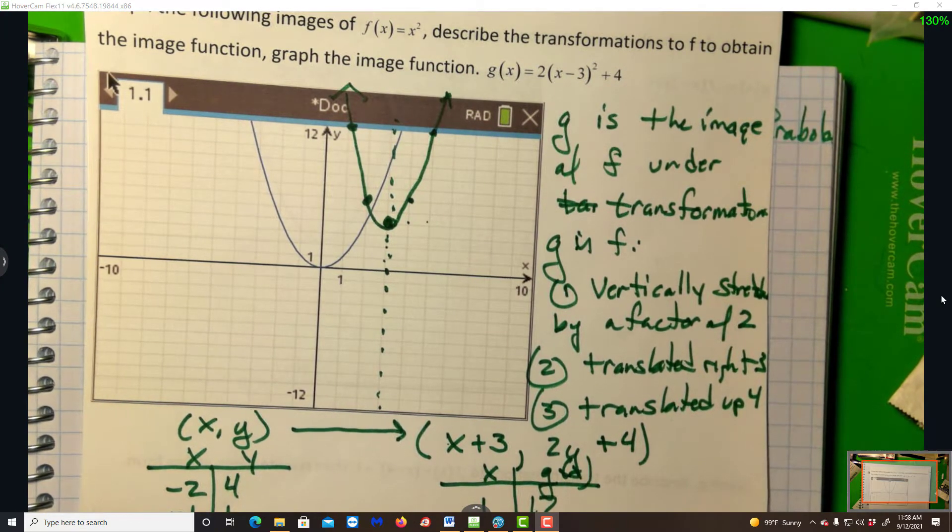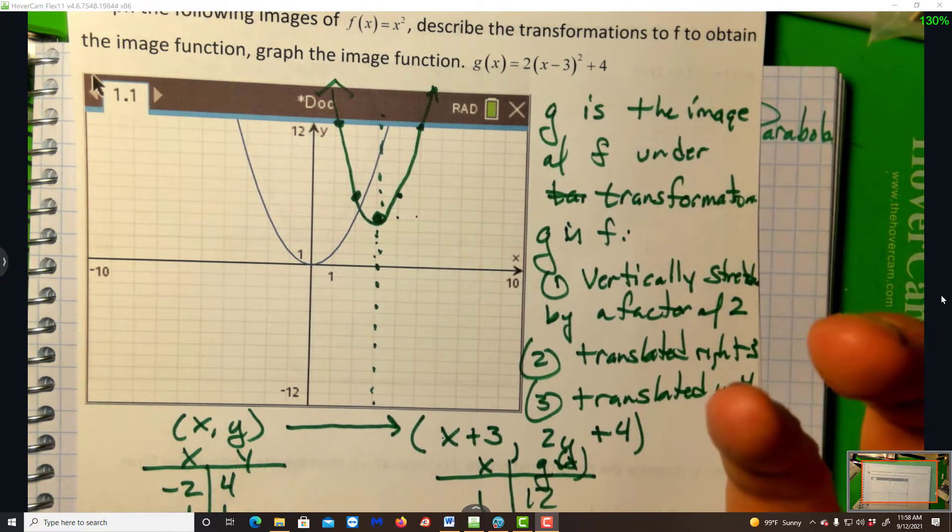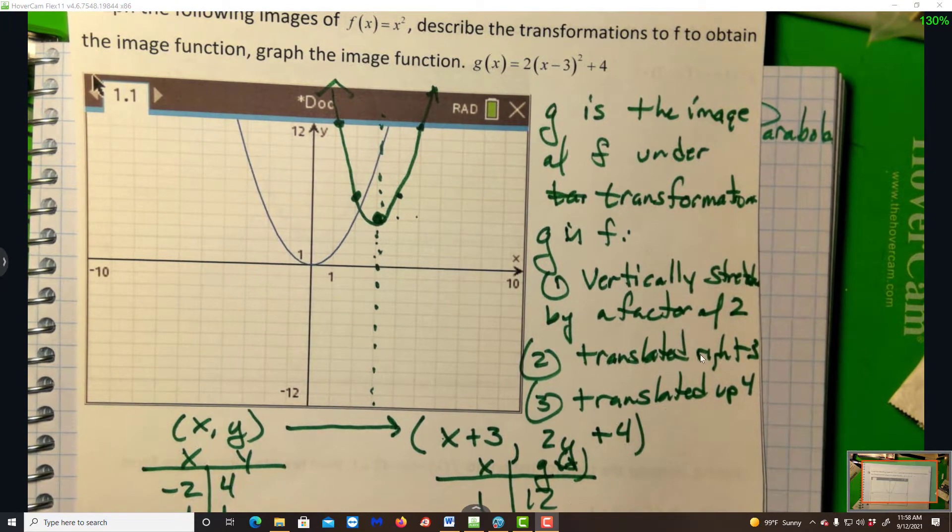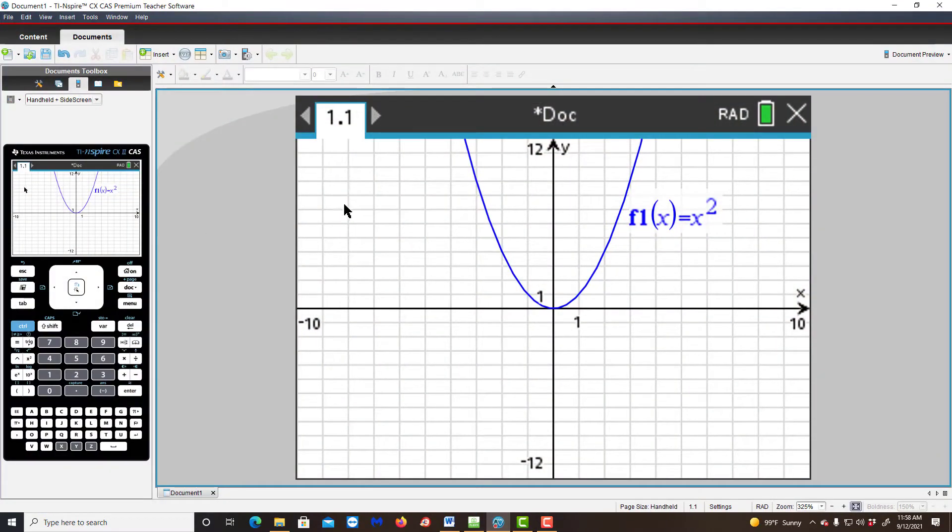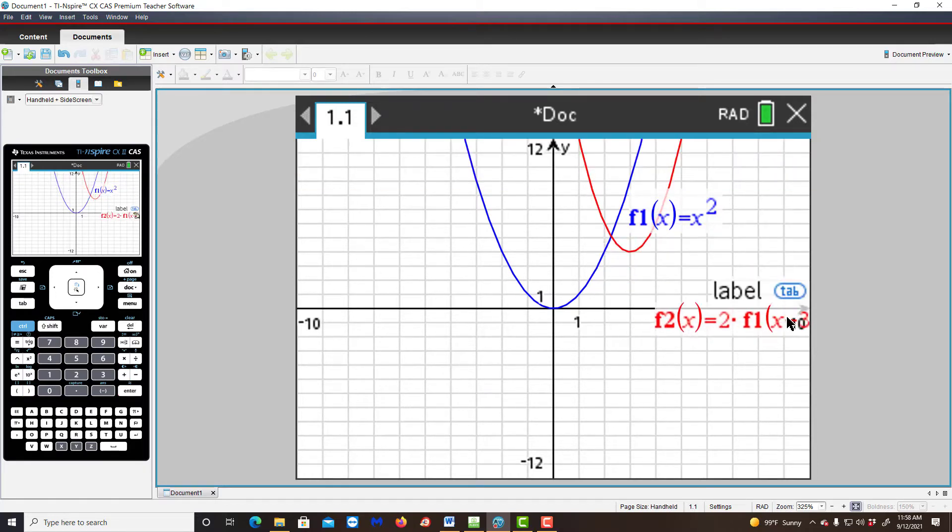So vertex form is very useful for finding a few things. Number 1, the axis of symmetry. Number 2, the vertex. If the coefficient of the square, and this is always going to be called a, is positive, it opens up, the vertex is minimal. If it's negative, it opens down, the vertex's y value is maximum. Now let's take a look at our graphing technology here, and you can see we did it right.